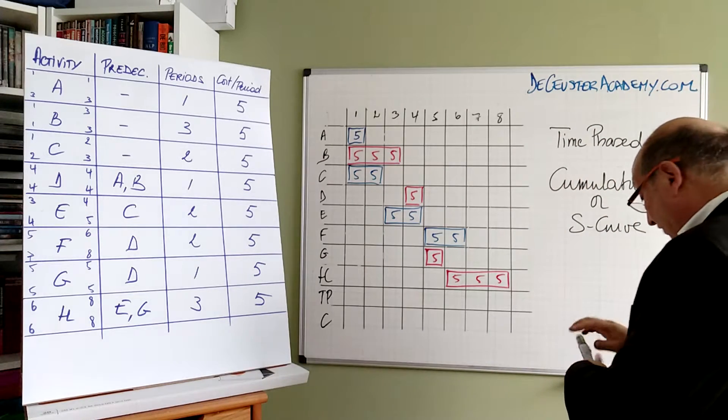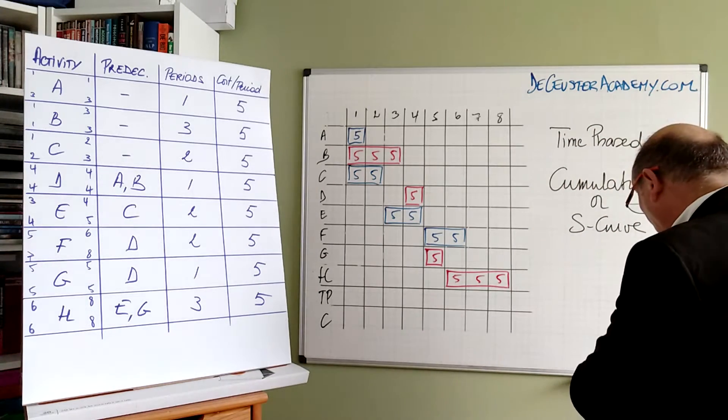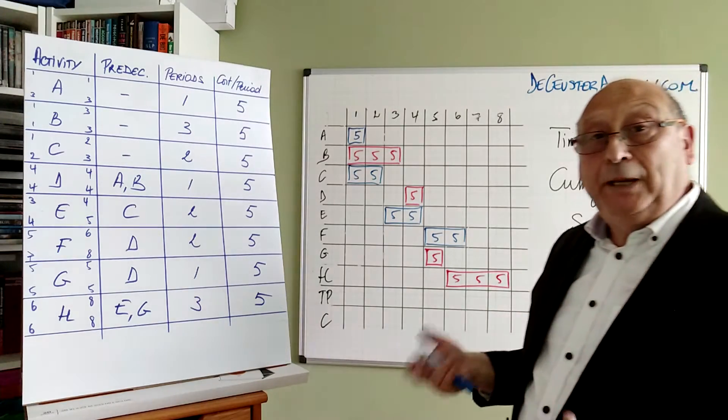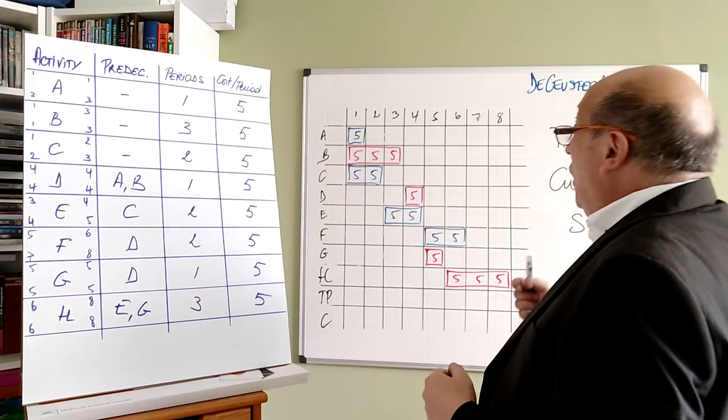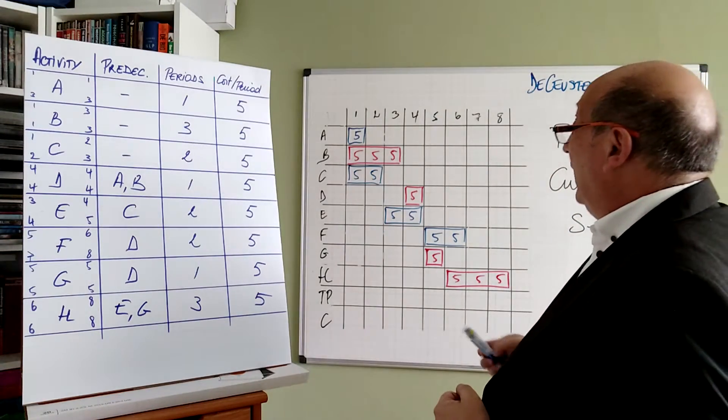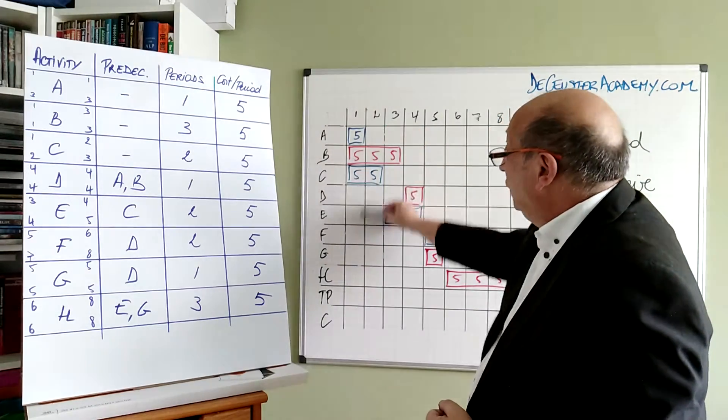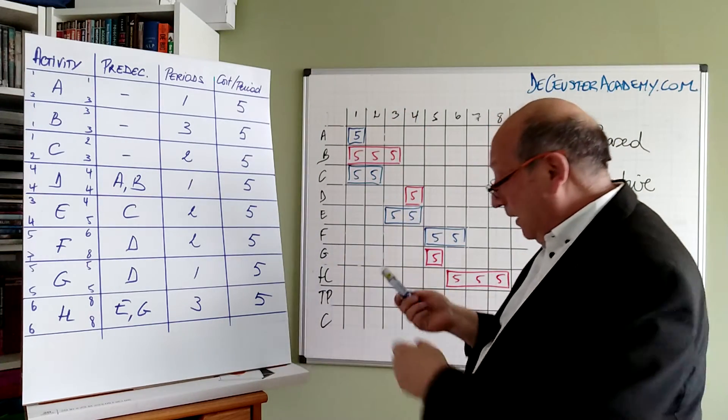So this is the Gantt chart that we can use for a lot of applications, also for looking at the people we are dealing with and the resource allocation. So let's now calculate. We have here the time-phased budget. We sum up everything per column.